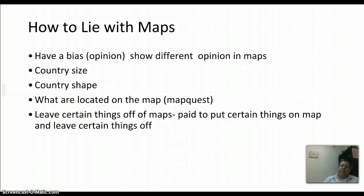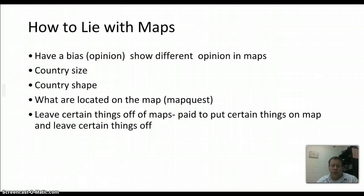Maps do lie. Just because it's a map doesn't mean it's true. We're talking about biases, and biases happen with maps as well. The map maker can change things — they can make certain things look bigger or smaller, show opinions, make their own country look better, or change the shape and location of countries. At one point almost all maps had Europe in the center because maps were made in Europe. Even on Google Maps or MapQuest, certain companies pay to have their stores shown, and others are left off. Maps definitely lie.